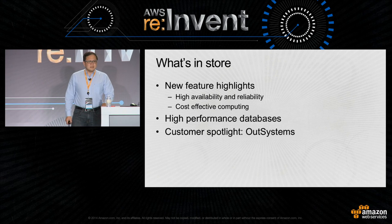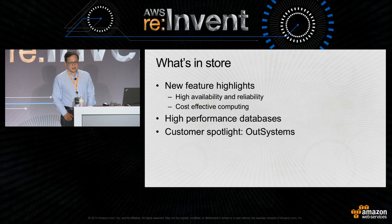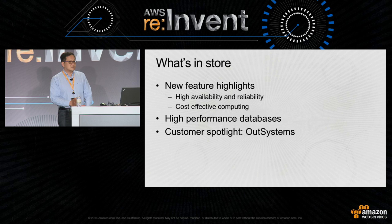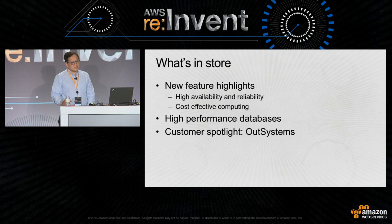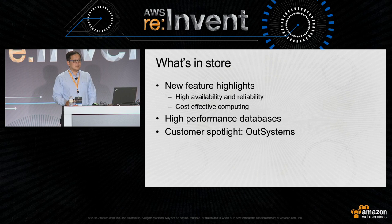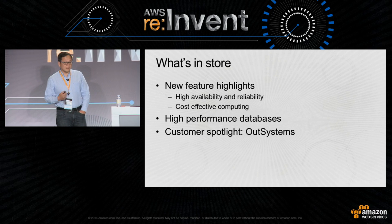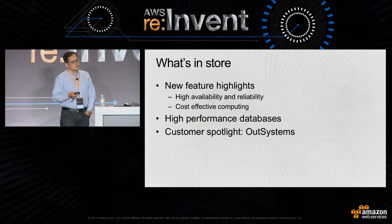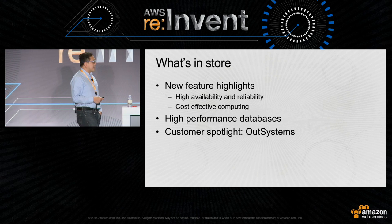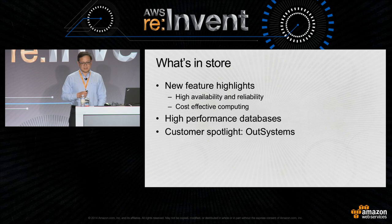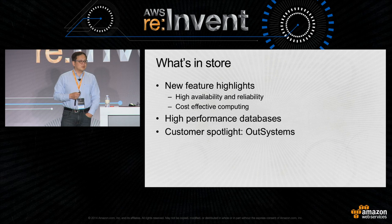In today's Deep Dive session, I'd like to talk about how you can build high availability and reliability systems using some of the exciting new features we have released in AWS. I'll also cover new instance and storage types announced in Andy's keynote this morning for more cost-effective computing, as well as traditional techniques for creating high-performance databases. Lastly, I'll invite Miguel up to share how OutSystems leverages SQL Server to build their platform.